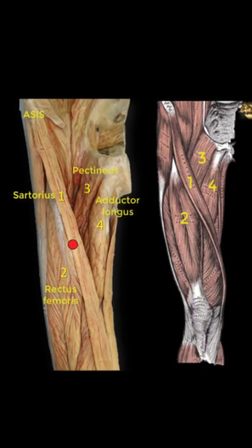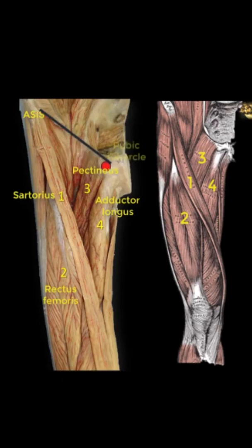Which pair of muscles forms the boundaries of the femoral triangle? The femoral triangle is an inverted triangle. Its base is located between the anterior superior iliac spine and the pubic tubercle, and this is formed by the inguinal ligament.